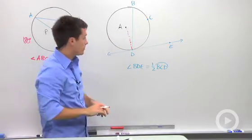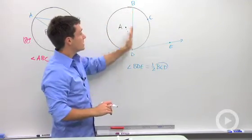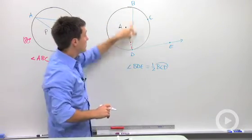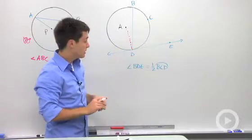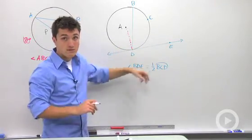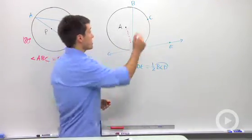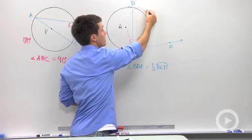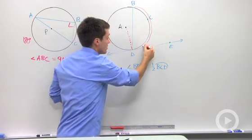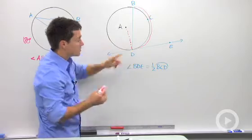What we do know is that if I draw in this chord BD, its angle BDE that it makes with the tangent is going to be half of its intercepted arc, where the intercepted arc starts at B, it goes through C, and it goes all the way down until you reach D.